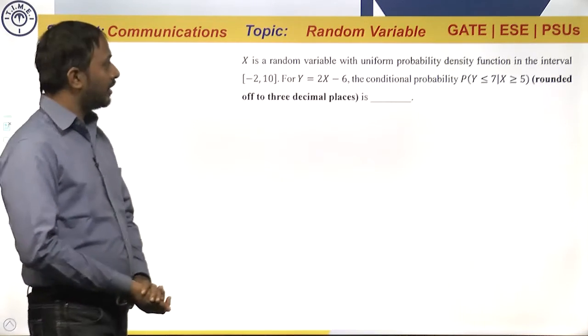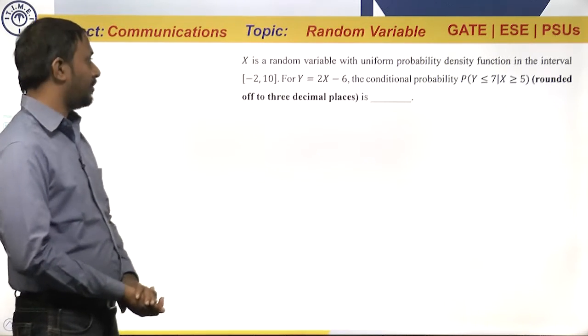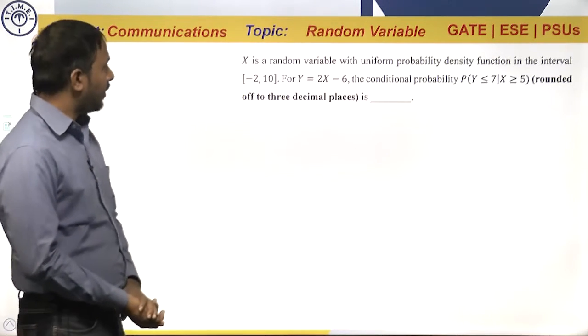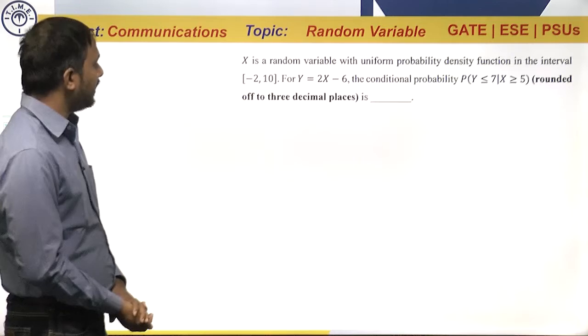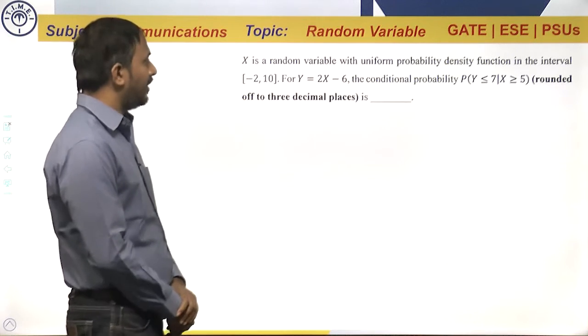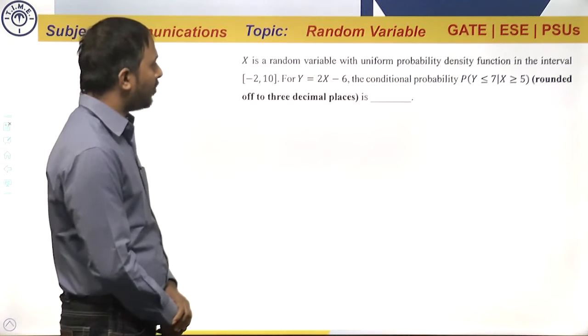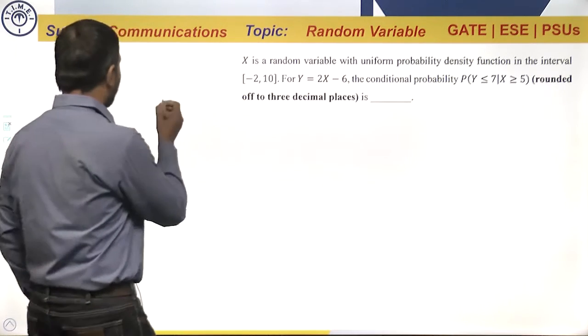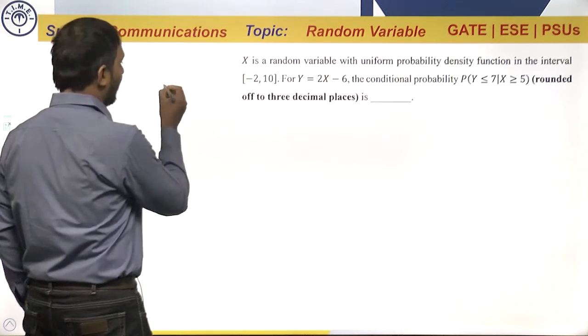Let us look at the next question. The next question is from the topic random variables in communication. In this question, x is a random variable with uniform probability density function in the interval minus 2 to 10.